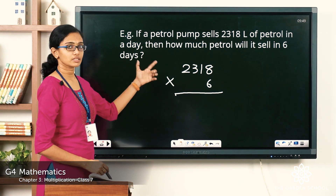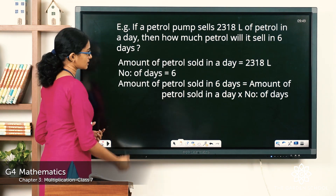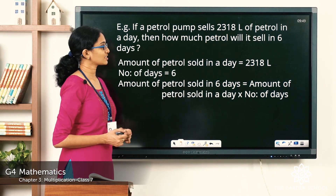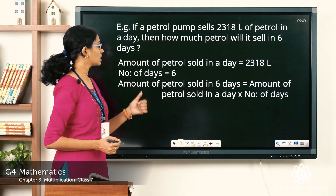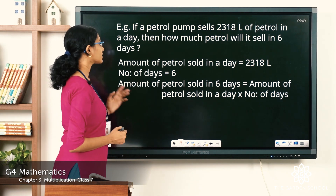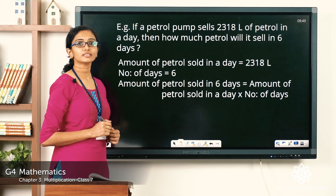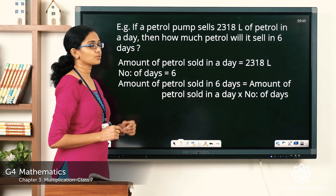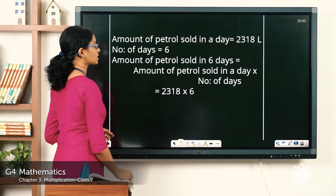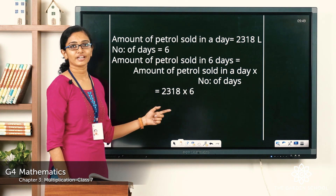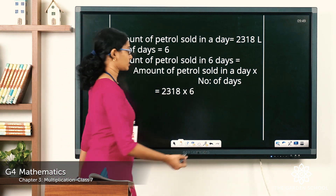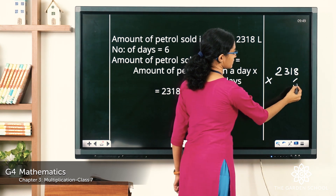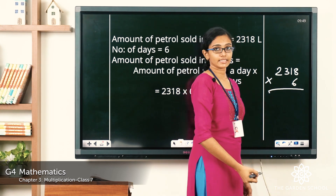Let us write the steps from the given question. The amount of petrol sold in a day is 2,318 liters, the number of days is 6, and the amount of petrol sold in 6 days equals the amount sold in a day times the number of days. Substituting the numbers gives us 2,318 × 6. Let us do the multiplication in the working column: 6 × 8 = 48.